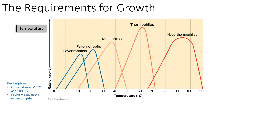Psychrophiles are the coldest group, growing between negative 10 degrees Celsius and around 10 to 17 degrees Celsius — very cold. They are found mostly in the ocean's depths where temperatures are really cold. These are bacteria that will not, under any circumstance, develop disease in a host, because they just don't grow well in temperatures above 17 degrees Celsius, which is well under what warm-blooded organisms maintain internally.